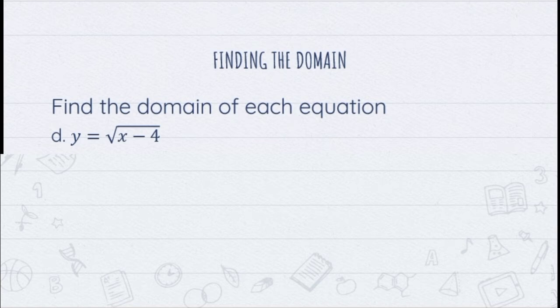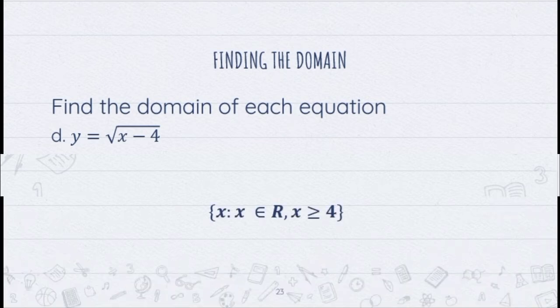Number 4 is still a radical function. As you can see in our radicand, the x here should be equal or greater than 4 so that we can avoid negative numbers. Therefore, our domain here is x is an element of r where x is greater than or equal to 4.